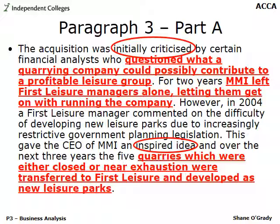They moved from a hands-off portfolio manager to a hands-on synergy manager. You could reference Johnson, Scholes and Whittington's concept of economies of scope — allocating resources to different parts of the business at different times. MMI now had quarries which had run out of minerals being used as leisure parks. From one resource, their scope increased: they now had two products — minerals from active quarries, and leisure parks from exhausted or closed ones.